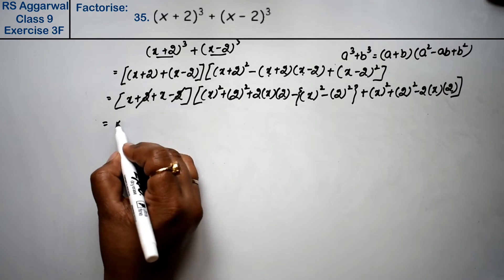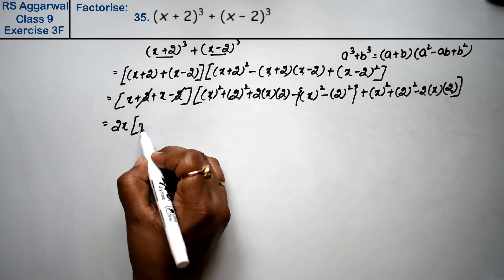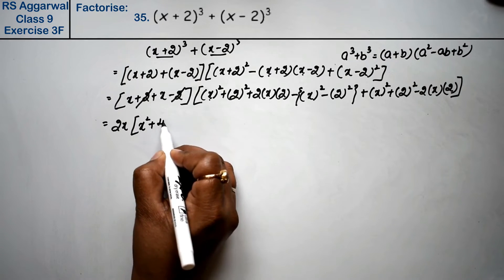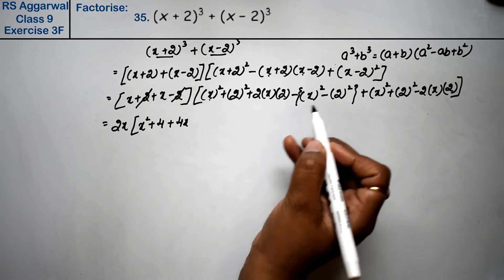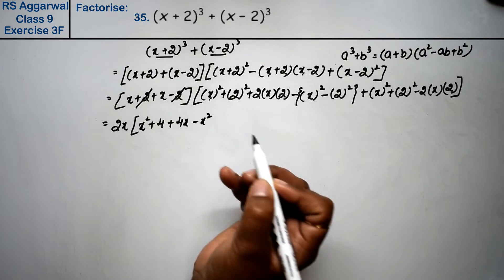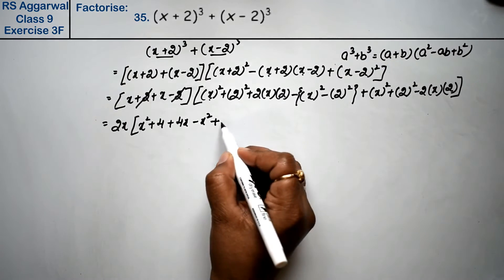So we get 2x in the bigger bracket. We have a² which is x² + 4 + 4x. If we open the bracket, we get minus x² plus 4.